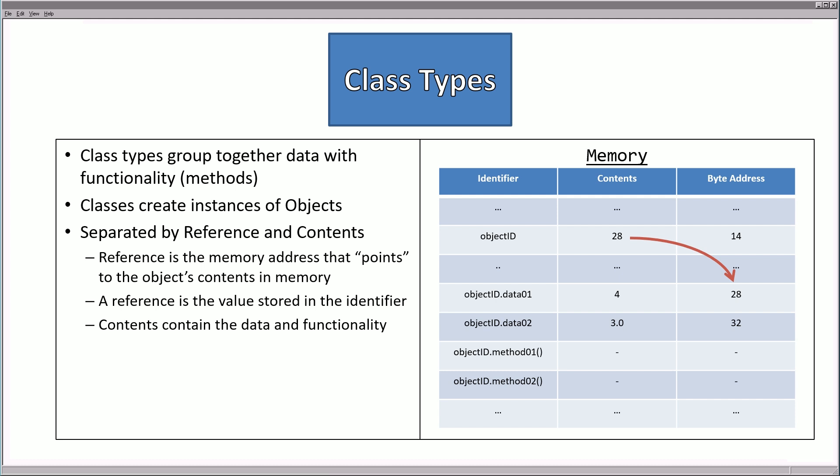The class type is not like a primitive type. Primitive types are just simple numbers or characters. Class types group together lots of data with functionality that we call methods. Classes create instances that we call objects. Sometimes these terms are used interchangeably, but one leads to the other.